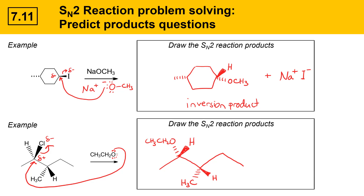Notice that when this reaction happened, there's another stereogenic center in the molecule — that one doesn't react. You have to be careful with SN2 substitution reactions: inversion of configuration only happens at the stereogenic center being attacked by the nucleophile. Not every stereogenic center in the molecule inverts — just the one that's reacting. This is inversion at the reacting carbon. The other product is chloride.